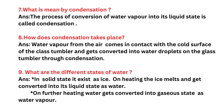Extra Question 7: What is meant by condensation? Answer: The process of conversion of water vapor into its liquid state is called condensation. Extra Question 8: How does condensation take place? Answer: Water vapor from the air comes in contact with the cold surface of a glass tumbler and gets converted into water droplets on the glass through condensation.